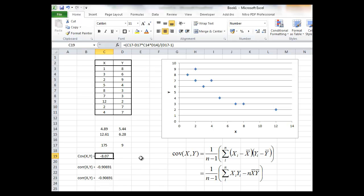So I get the covariance of minus 8.07 which confirms our guess that the covariance would be negative. In other words when x is above its mean we can expect y to be below its mean.